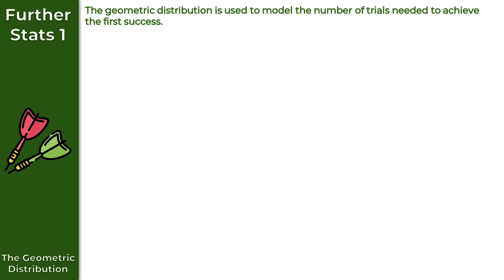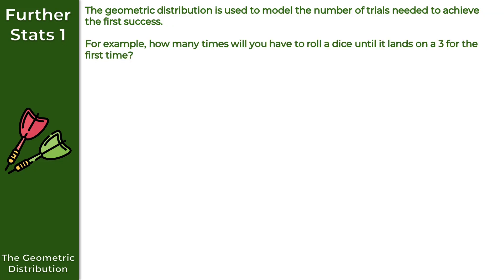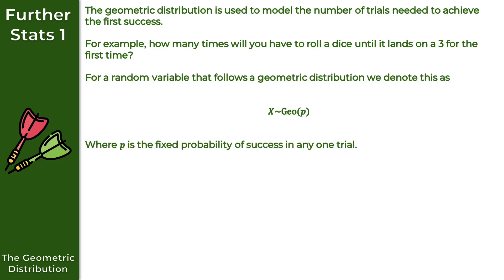In this video, I want to take a look at the geometric distribution. The geometric distribution is used to model the number of trials needed to achieve the first success. For example, how many times will you have to roll a dice until it lands on a three for the first time? In terms of notation, if x follows a geometric distribution, we denote this as x ~ Geo(p), where p is the fixed probability of success in any one trial.